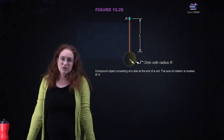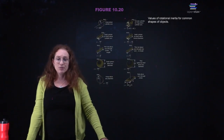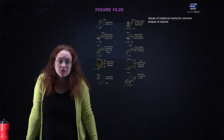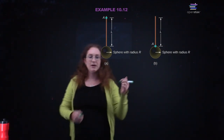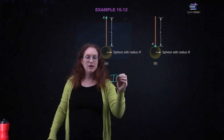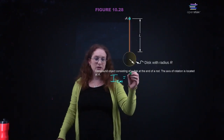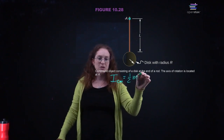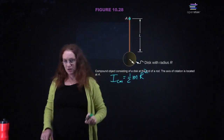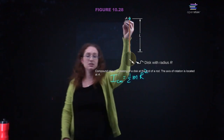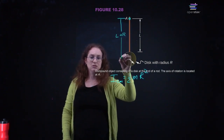Here you have a disk with radius r, a distance l from the center. We can go back to our table — a disk with radius r. The moment of inertia about the center of mass for a disk is one-half mr². If you instead rotate it about an axis at a distance, that distance is l plus r from the center of mass. So the moment of inertia about point A is the moment of inertia about the center of mass plus the mass times the distance squared: one-half mr² plus m(l + r)².